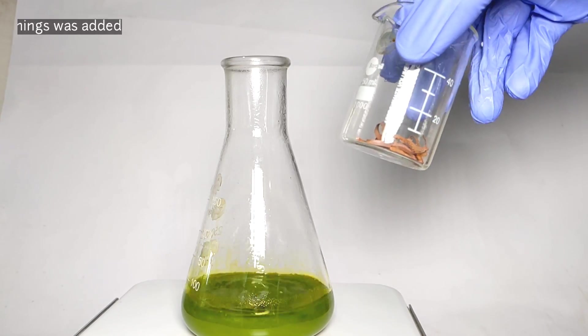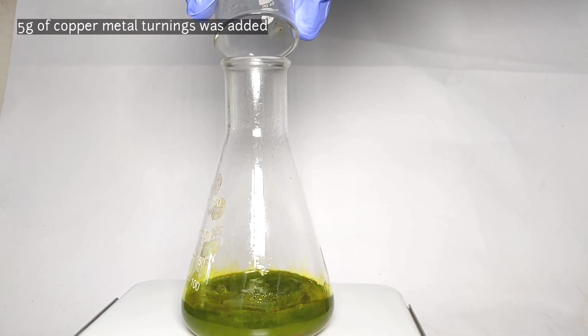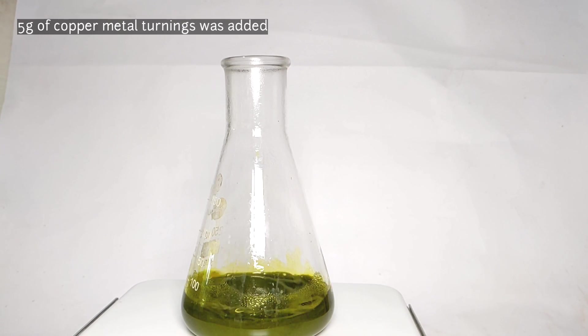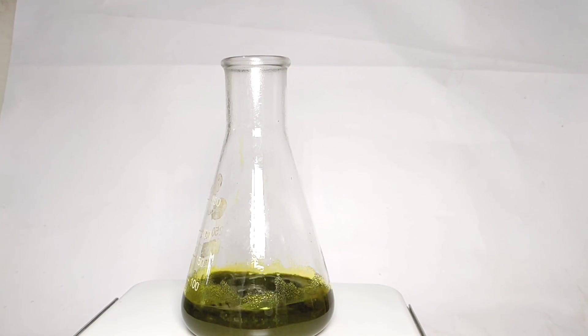And then 5 grams of copper metal turnings was added to the flask. You will immediately notice the color turning dark to almost black. The solution is then boiled until the solution turns clear and transparent.